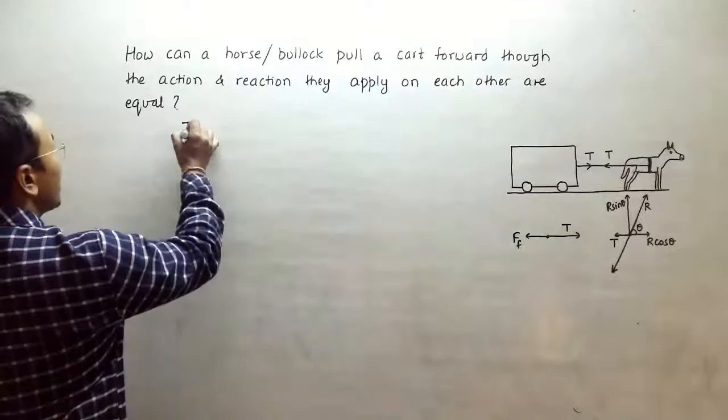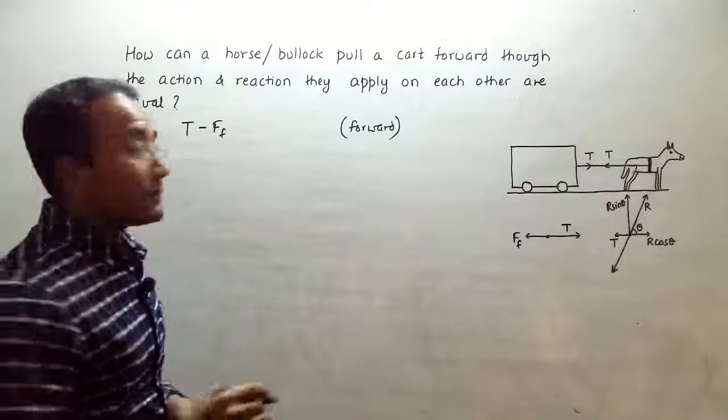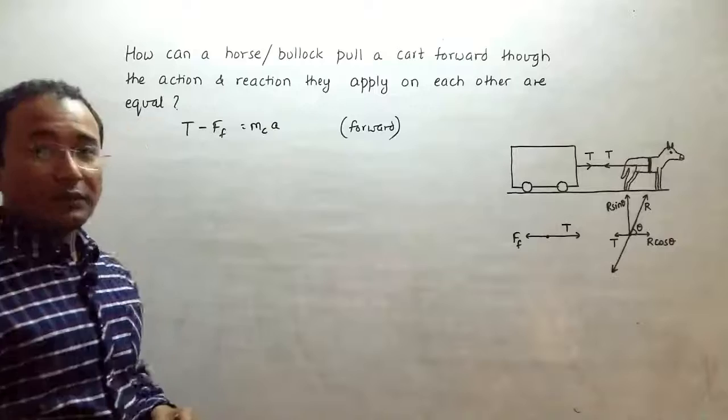So for the cart, we have the resultant force is equal to T minus FF, which will be in the forward direction. This is equal to mass times acceleration, so we have mass of the cart times its acceleration in the forward direction.